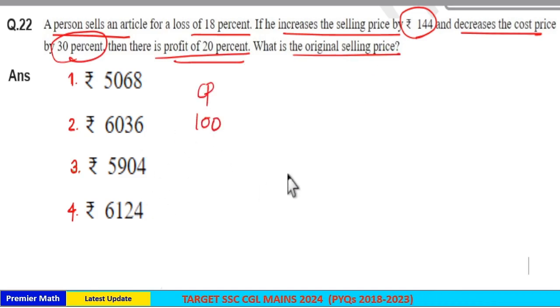Consider cost price as Rs. 100 or 100 part. Now, he sold it at a loss of 18% means sell price here is equal to Rs. 100 minus 18, which is 82 part.